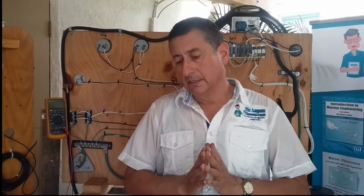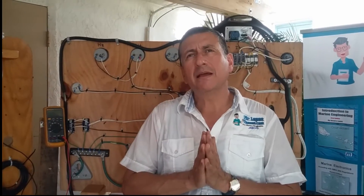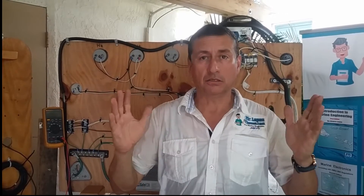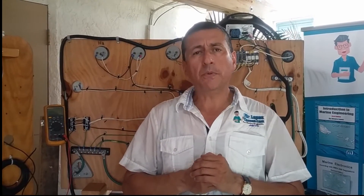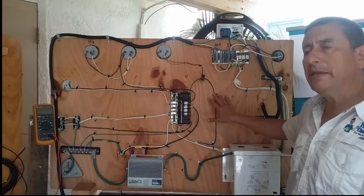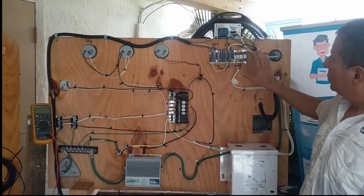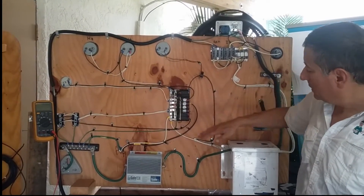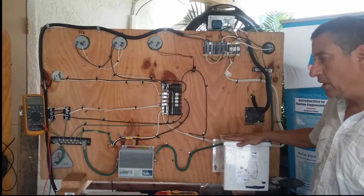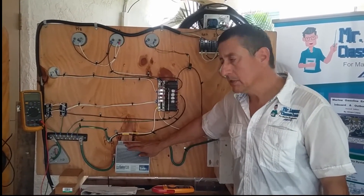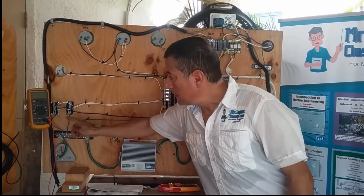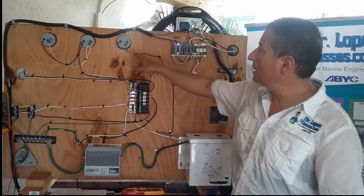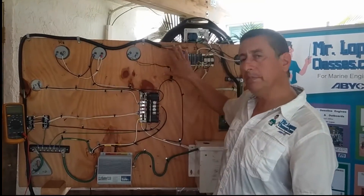How many ground bus bars do you have in your boat? In your boat, normally you have an AC panel — the typical AC panel with shore power, inverter, generator, isolator transformer, galvanic isolator, bonding bus bar, and zinc anodes. This is the typical AC panel with volt meter and frequency meter.